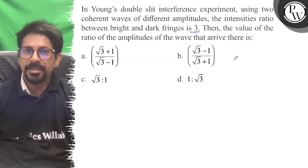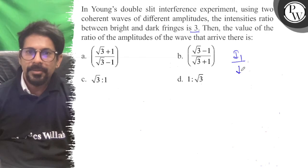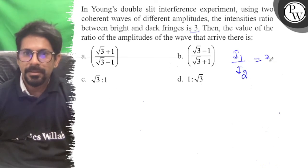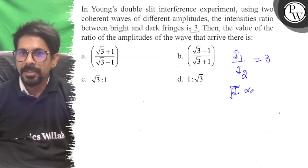The intensity ratio is 3. We know that I is proportional to A squared, so root I is proportional to A.